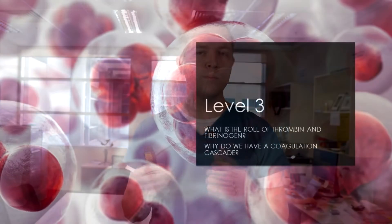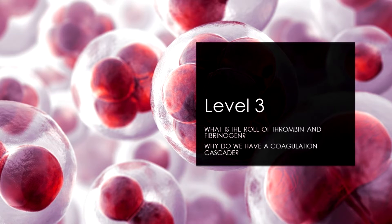Now that we understand how platelets are activated, let's talk about thrombin and fibrinogen and why we have a coagulation cascade at all. As a medical student I found this dry and boring and would repeatedly forget the cascade. The important big-picture question is: if thrombin is the main activator of fibrin, why do we need all these other factors? The reason is hemostasis itself — it's a balance of clotting and bleeding, and the cascade acts as a check.